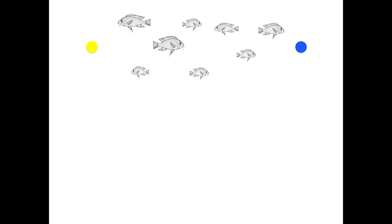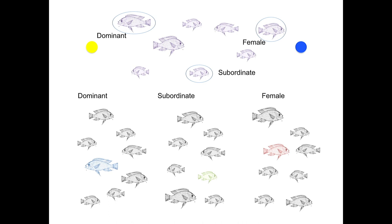We take individuals at different social ranks — dominant and subordinate males — who now know this association, and put them into a new group of naive fish. We ask: how quickly does this group of naive fish come to learn this association task, given that they have a social demonstrator of different ranks? Otherwise, these groups are equivalent except for the social rank of the demonstrator.